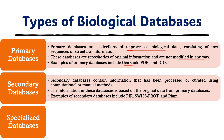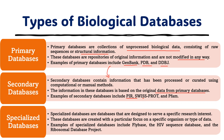Secondary databases contain information that has been processed or curated using computational or manual methods. The information in secondary databases is based on original data from primary databases, so secondary databases get their information after analysis of primary databases. Some examples of secondary databases are PIR, SwissProt, or PFAM. Specialized databases are designed to serve specific research interests, created with a particular focus on a specific organism or type of data. Examples include FlyBase, the HIV sequence database, or the Ribosomal Database Project.